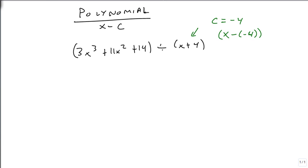Now that I know what c is, I'm going to build an upside down L, and I'm going to put my c on the outside as a minus 4. Then I'm going to look at just the numbers, the 3, the 11, the 14, and notice there's a 0x missing. I'm just going to write those numbers in: 3, 11, 0, 14.